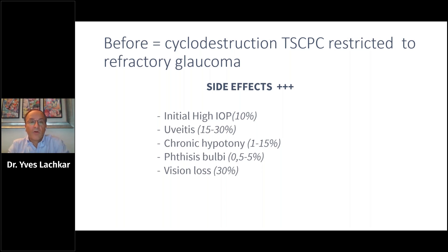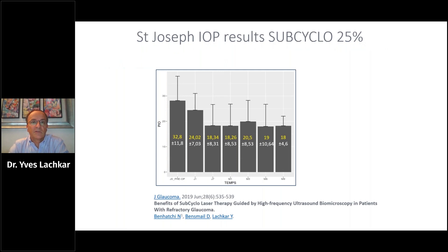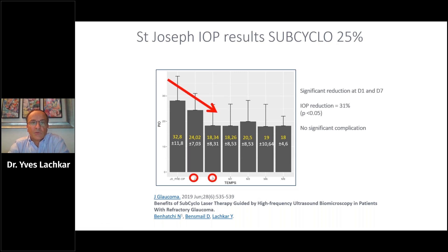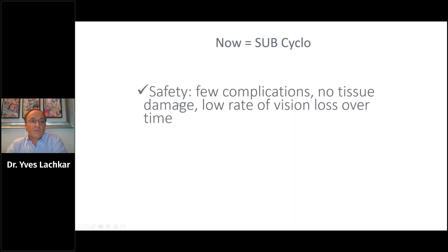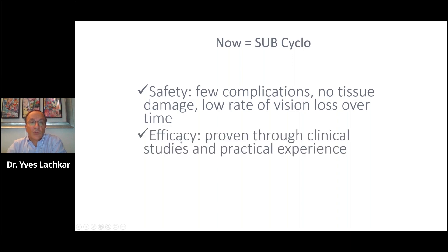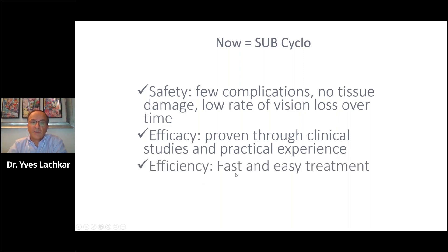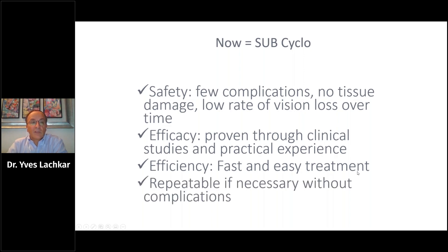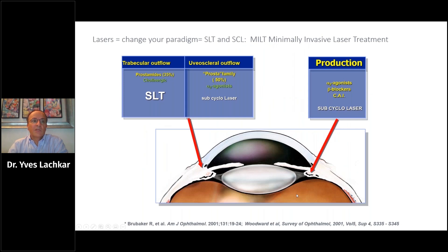It is the same story with cyclophotocoagulation. Previously it was restricted to refractory glaucoma, with side effects including high IOP, uveitis, and severe complications. Now we are seeing good results with subcyclo — 25% ultrasound cyclo — with very good IOP reduction and no significant complications presented at this symposium. Subcyclo is now a safe procedure with few complications, low rate of visual loss, proven efficacy across clinical stages, and is fast, easy, and repeatable if necessary.